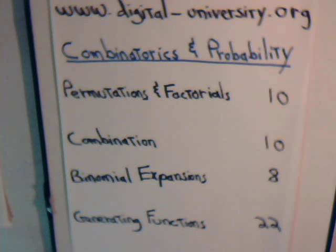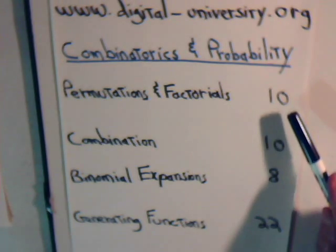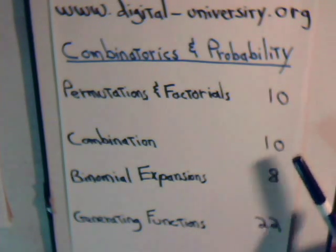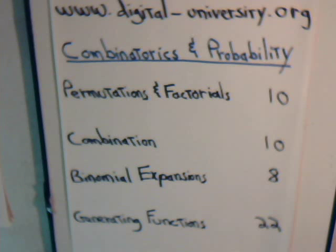This is our second video on how to solve different types of probability problems. If you just found us on YouTube, you can go to the website at digital-university.org and then go to the combinatorics and probability section. We have a whole series of videos there — about ten on permutation problems, another ten on combination problems, and then a last group covering generating functions and how we use them to solve more complicated combination and permutation problems.